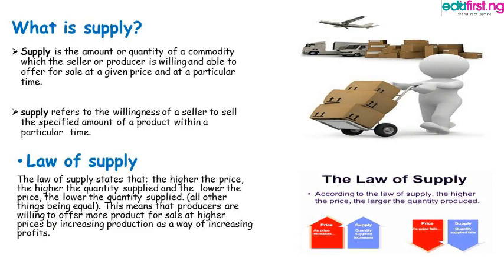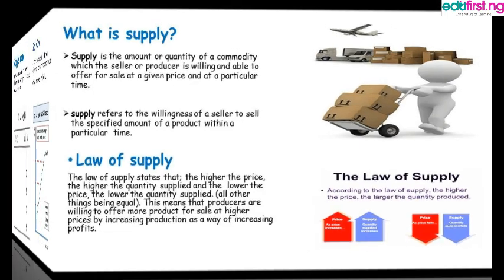The law of supply states that the higher the price, the higher the quantity supplied, and the lower the price, the lower the quantity supplied, all other things being equal. This means that producers are willing to offer more products for sale at higher prices by increasing production as a way of increasing profits.